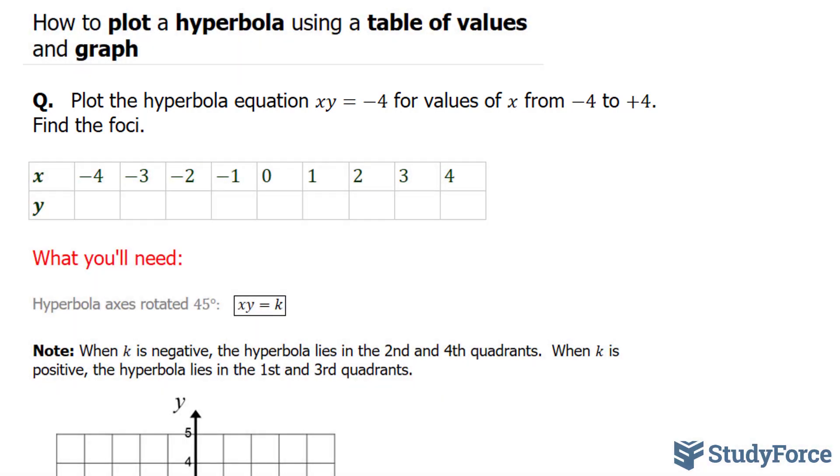What I'll do is show you how to find the first three y's and then fill the table in automatically. So starting with x is equal to negative 4, I will substitute negative 4 into my x where I have negative 4 times y is equal to negative 4. Solving for y, I end up with y is equal to positive 1.